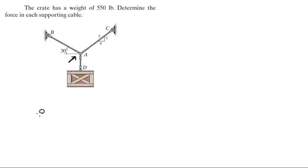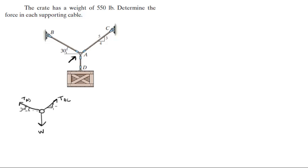So let's draw the ring. We got a force which is the weight of the crate, and then we got the tension in cable AC and a tension AB. You know that this angle is 30 degrees, and you know this triangle to be 3, 4, and 5. Now that you have the free body diagram, the problem becomes much easier.